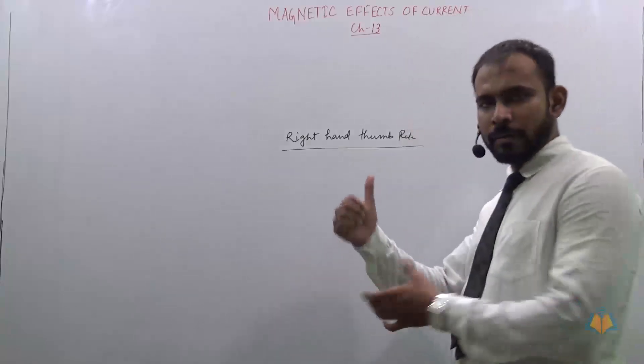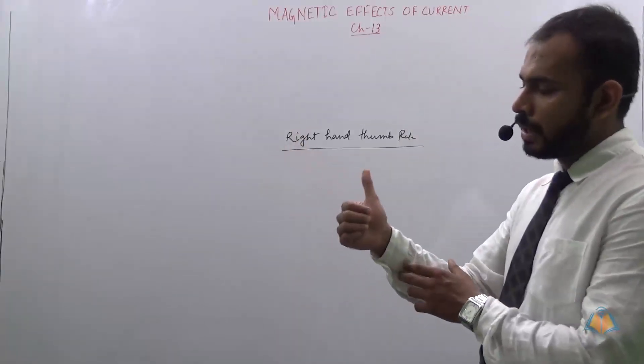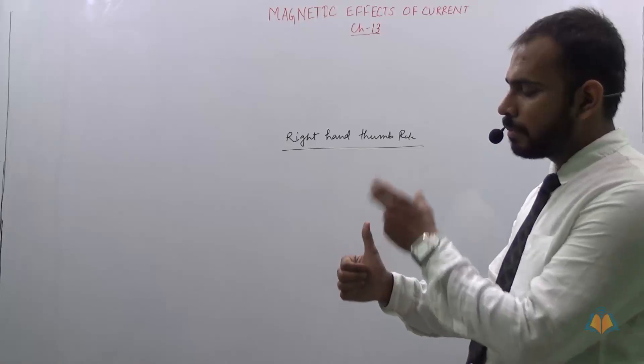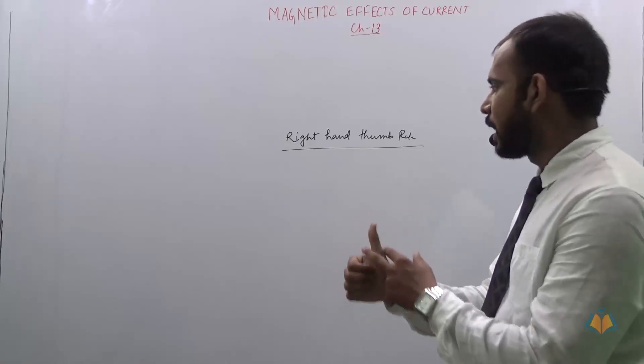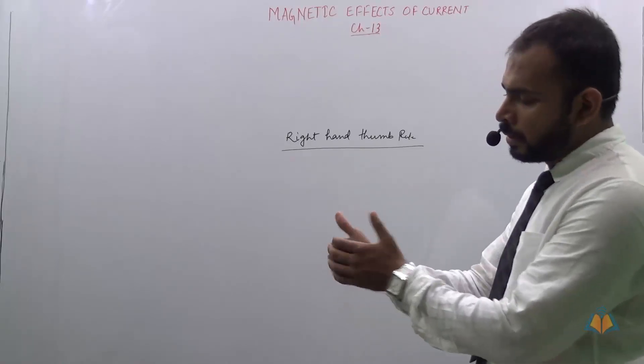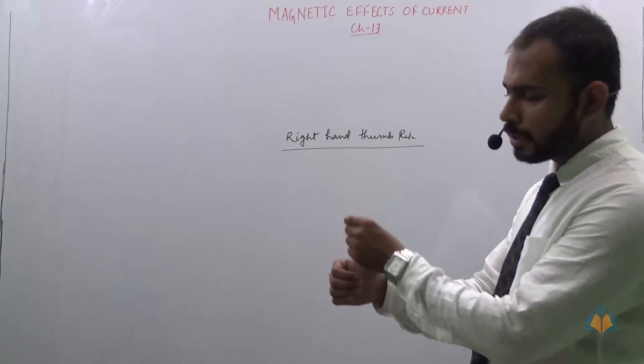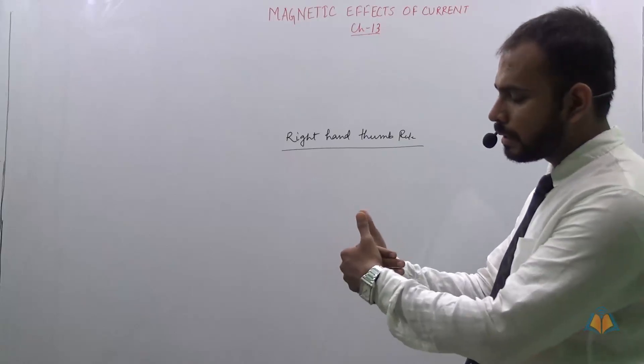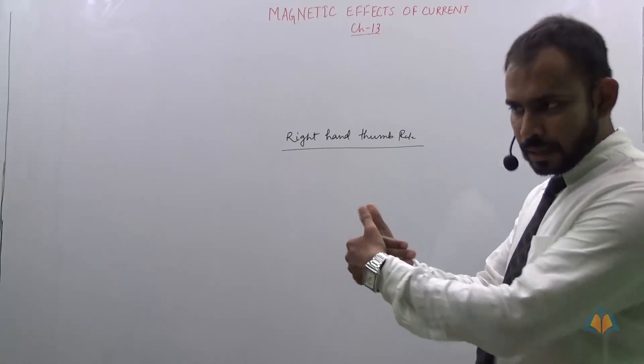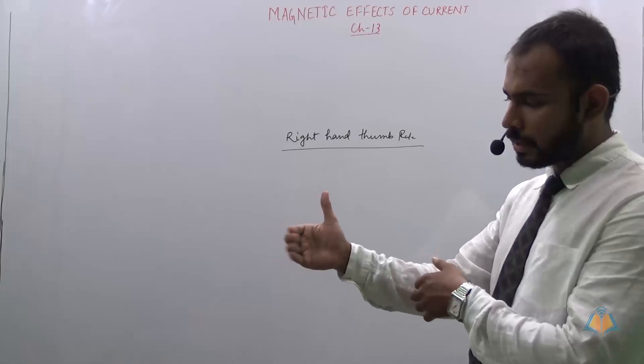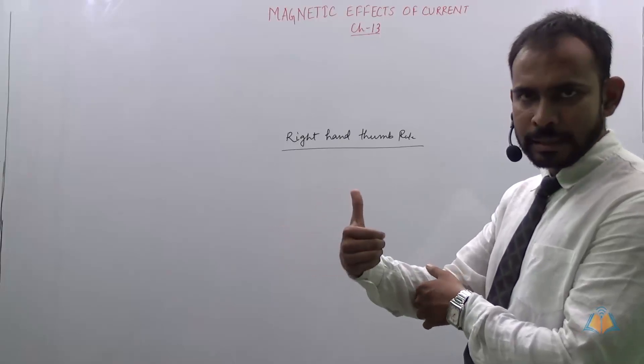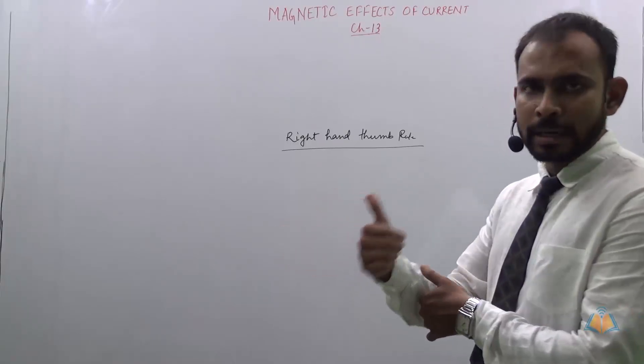When we take right hand in such a way that the thumb points the direction of current, then the direction in which our fingers encircle actually tells us about the direction of magnetic field.